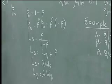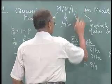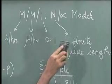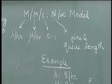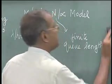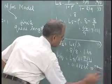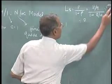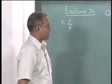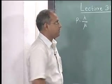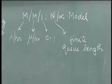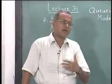Now we move on to the second model. The second model is called the MM1N infinity model, which means the queue length is now not infinite but finite — it becomes a finite queue length model. Some of those equations will still hold, except that when there are already N people in the system, the person who is coming in does not join the line and leaves.